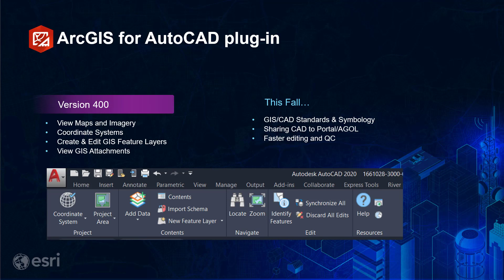This release adds support for hosted feature layers, attribute attachments, and URL hot links. The next release of ArcGIS for AutoCAD is currently in development and due this fall. It includes industry-specific data templates for creating CAD and GIS content, including ArcGIS Indoors. It also introduces an even tighter integration with Esri Field Maps, including an ArcGIS for AutoCAD initiated field data collection workflow using ArcGIS Field Maps.